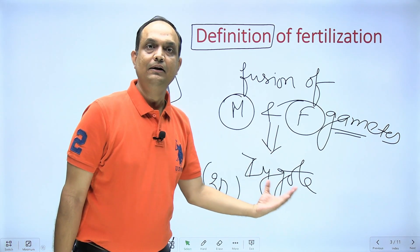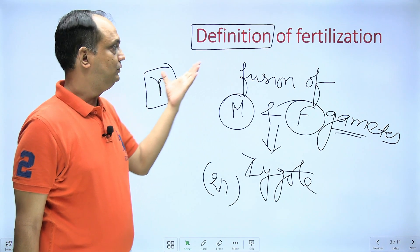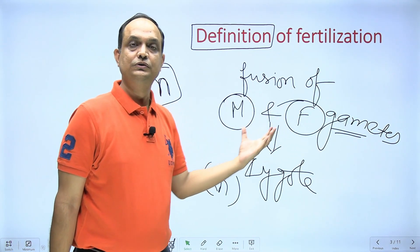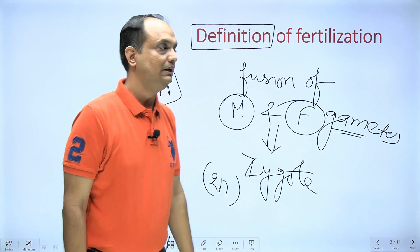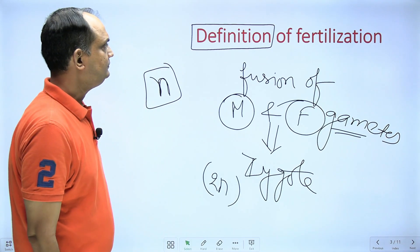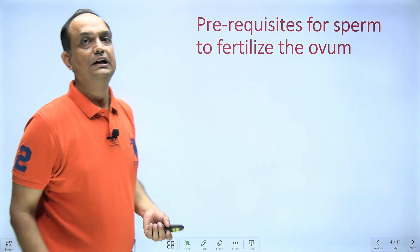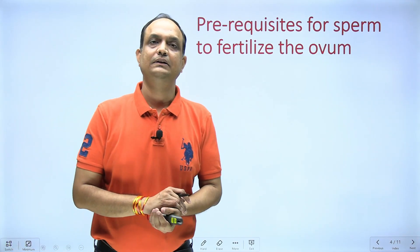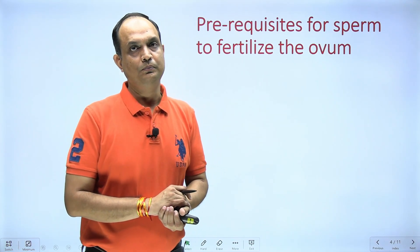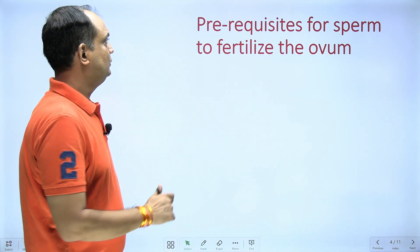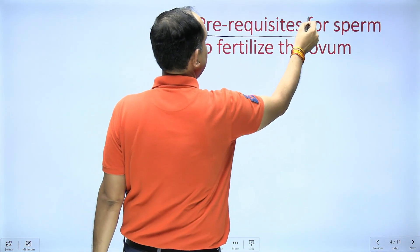By the process of fertilization, two haploid cells fuse to form a diploid cell. Fertilization takes place in the ampulla of the fallopian tube.